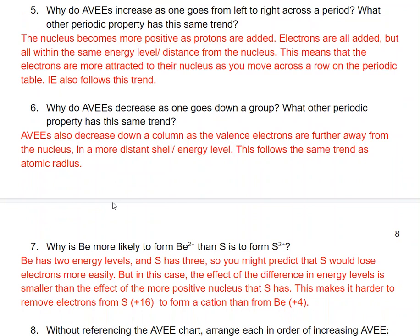Why do AVEEs decrease as you go down a group? That's because those electrons are further away from the nucleus in a more distant energy level or shell. This follows approximately the same trend as atomic radius — it's an inverse trend: as atomic radius gets bigger, AVEEs get smaller.